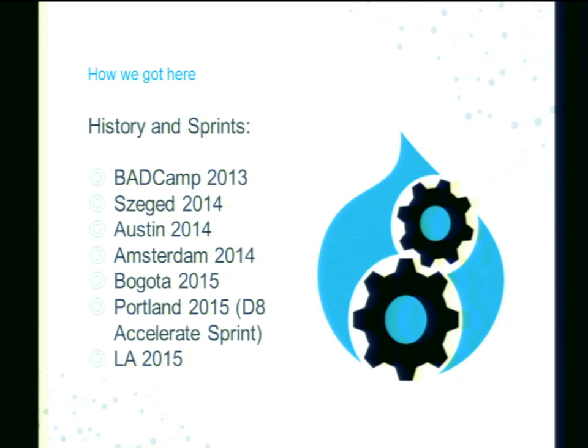At BADCamp we took the architecture and said what do you think, and had enough people say if I was building it, that's how I'd build it — you're on the right track. So we walked out of BADCamp in 2013 and started a new unofficial community initiative to build this project. The next step was at Dev Days and SEGED in 2014. We brought together a team at the sprint to see what we could build. Within three days at SEGED, Ricardo Amaro built a fully functional prototype of the test runner in three days — which did everything from installing Docker, starting the containers, running the test suites, and giving you the results. From a proof of concept, it was absolutely amazing.